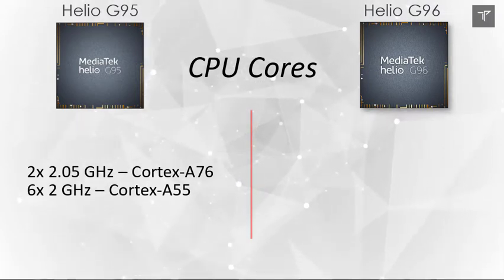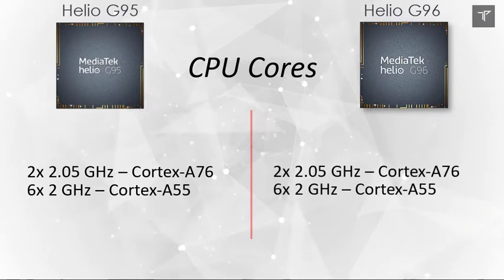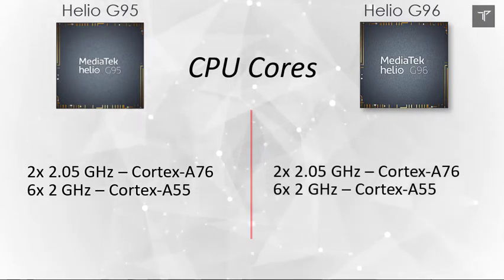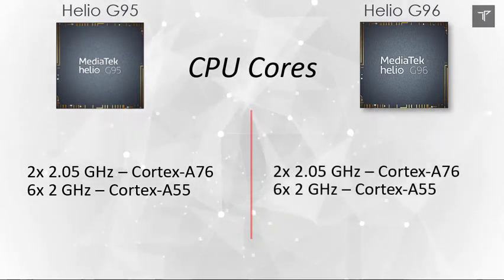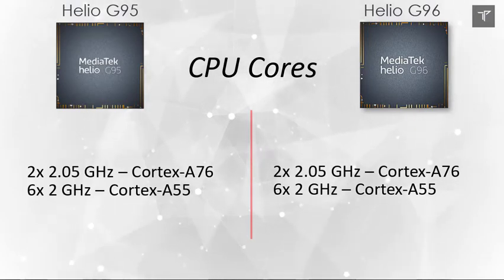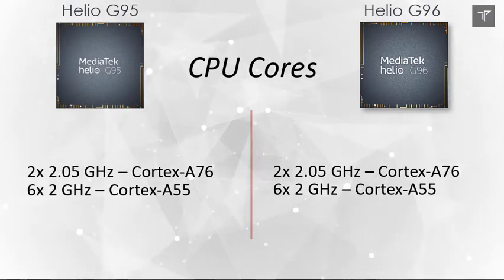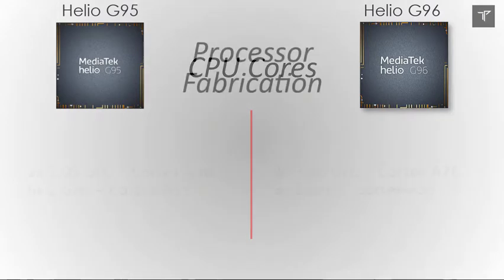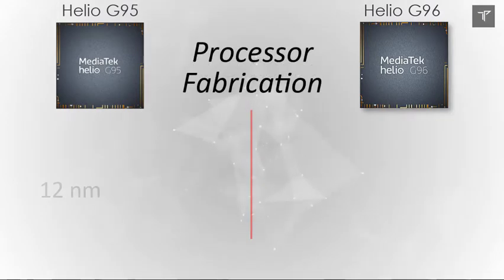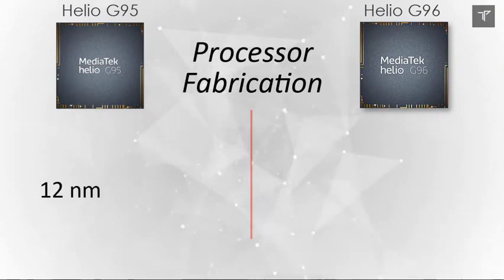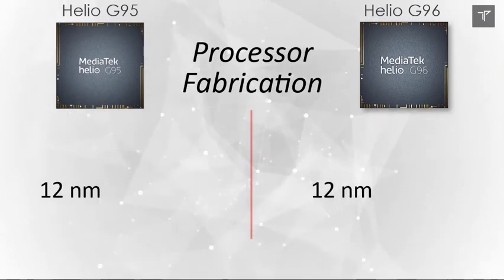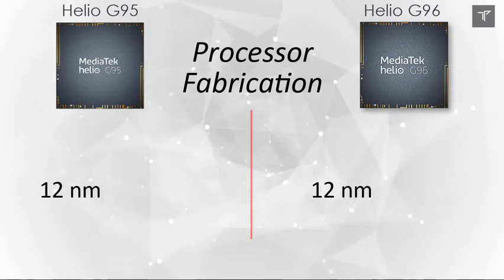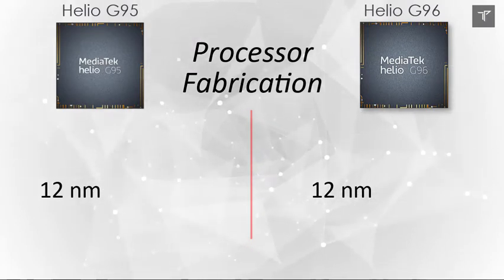You won't be able to see any meaningful CPU difference between the Helio G95 and G96. The processor fabrication on both is also the same at 12 nanometer, which determines how power-efficient and battery-efficient the processor is in day-to-day usage.